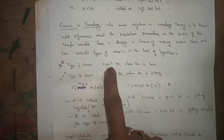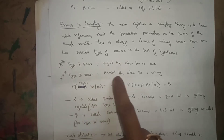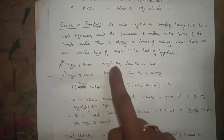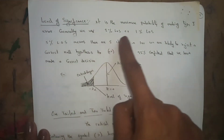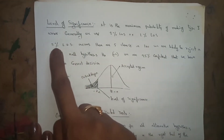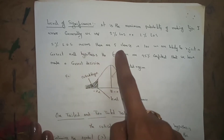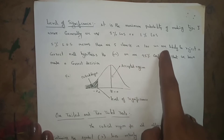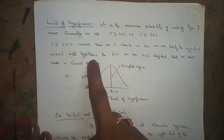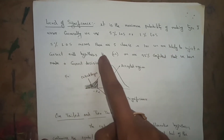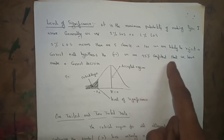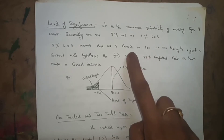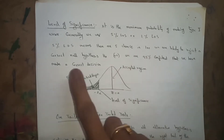Type I error means rejecting H0 when H0 is true. Type II error means accepting H0 when H0 is wrong. A 5% level of significance means there is a 5% chance in 100% that we are likely to reject a correct null hypothesis H0, and we are 95% confident that we have made a correct decision.